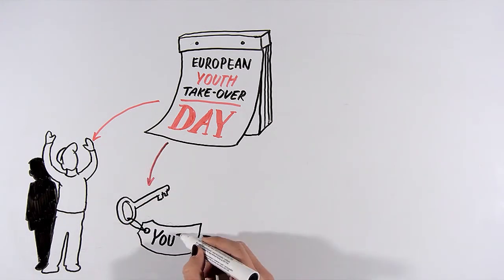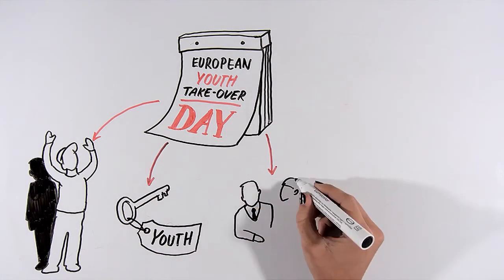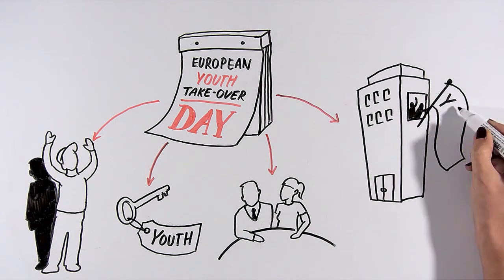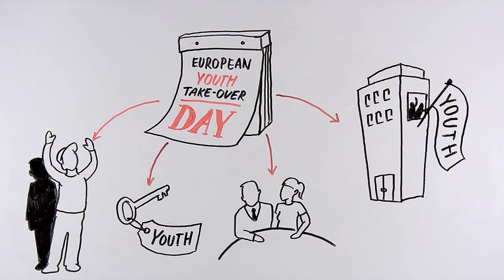Open the parliaments. Have a young mayor co-manage with an adult mayor, or a youth group take over the board of an NGO. For just one day per year, everywhere in Europe to start with.